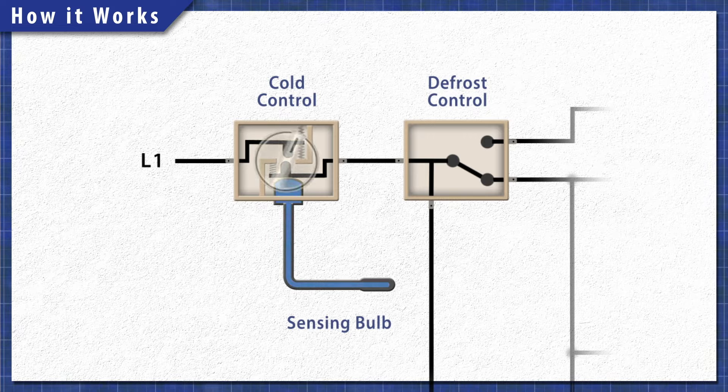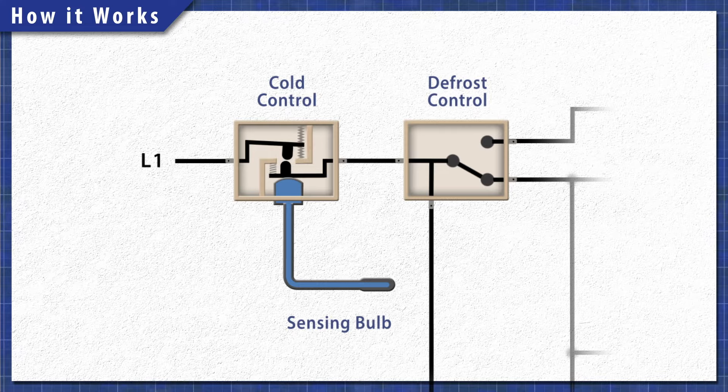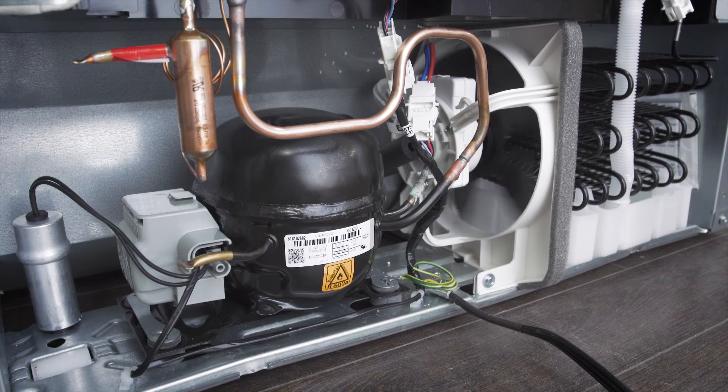When the dial is turned to a colder setting, it moves one of the contacts closer. This means that it takes less heat to close the contacts. In this case, the compressor runs more frequently, which lowers the fridge temperature.